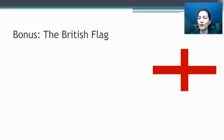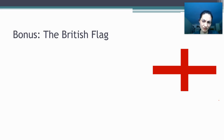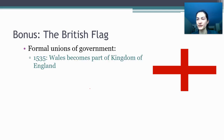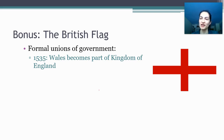One random historical bonus is that the flag of the United Kingdom, known as the Union Jack, actually carries within it the history of the building of the modern British state. There have been a few different formal unions of government that form what's now called the United Kingdom of Great Britain and Northern Ireland. Starting in 1535, Wales in the west is annexed to the Kingdom of England. The flag of the Kingdom of England is a fairly plain red cross on a white background, and nothing changes when Wales is annexed — which is unfortunate because the Welsh flag is much cooler because it has a dragon.